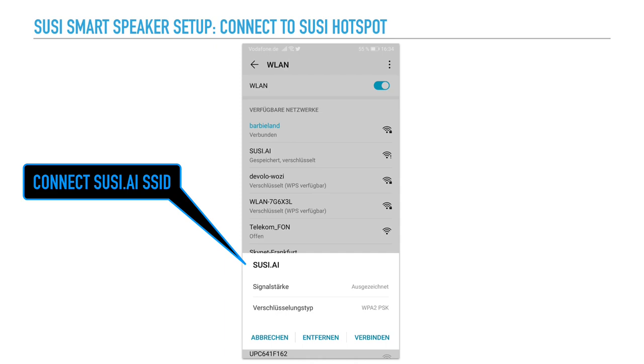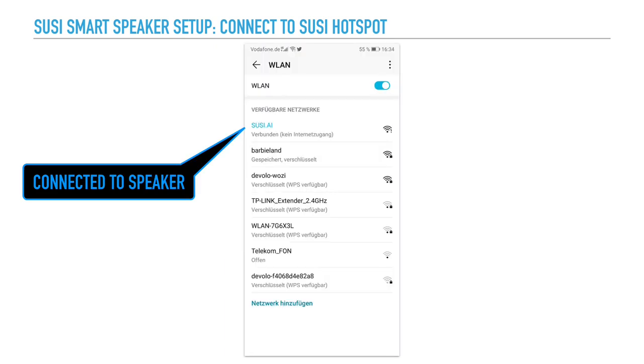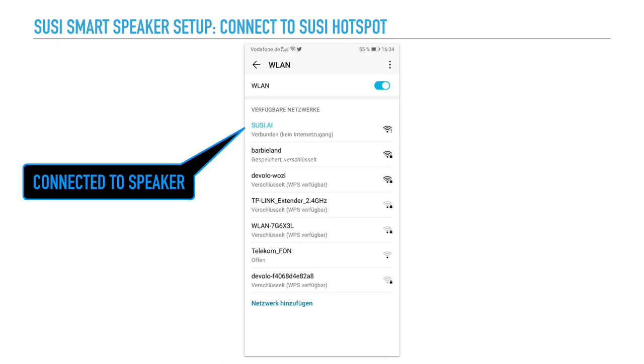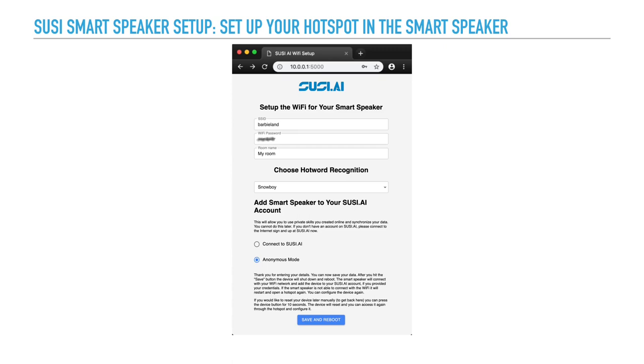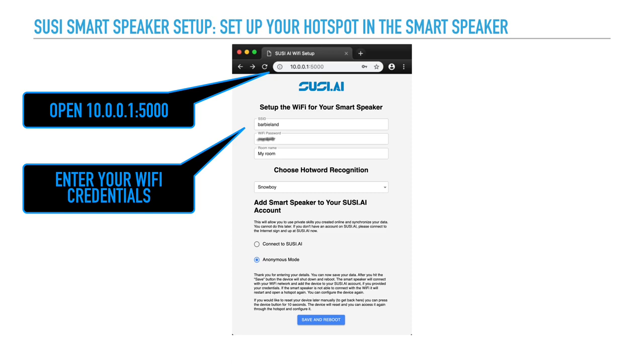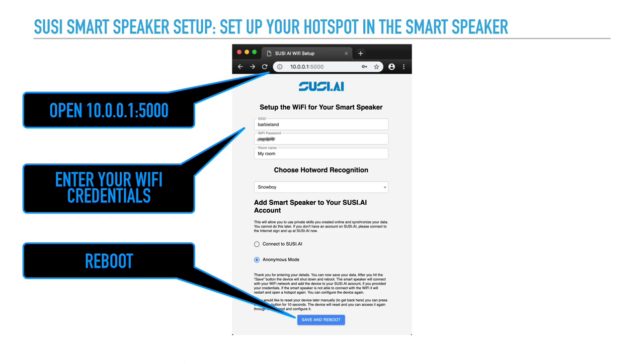You connect to this network and after you have a connection you can browse to the page 10.0.0.1. This is then the configuration page for your smart speaker. It's hosted on the smart speaker and you just need to put in the SSID of your own Wi-Fi at home and finally you click reboot and that means the speaker reboots with the configuration of your own Wi-Fi.